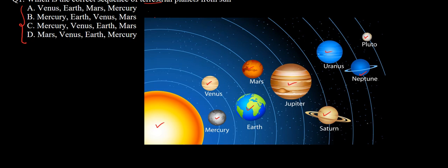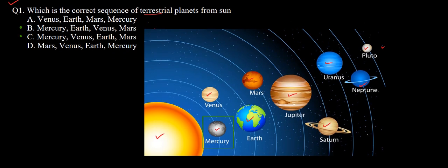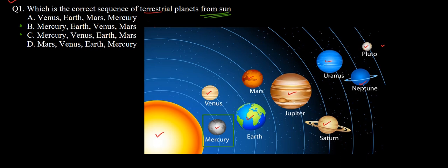So we know that Pluto is no more part of the solar system, still we have included it here. Our first planet as you can see is Mercury. So in the options you can see we have Mercury in option B and C, so the only possible answers can be B or C. Remember it is asked from the Sun, so we need to consider the nearest planet to the Sun first, and the last will be the farthest.